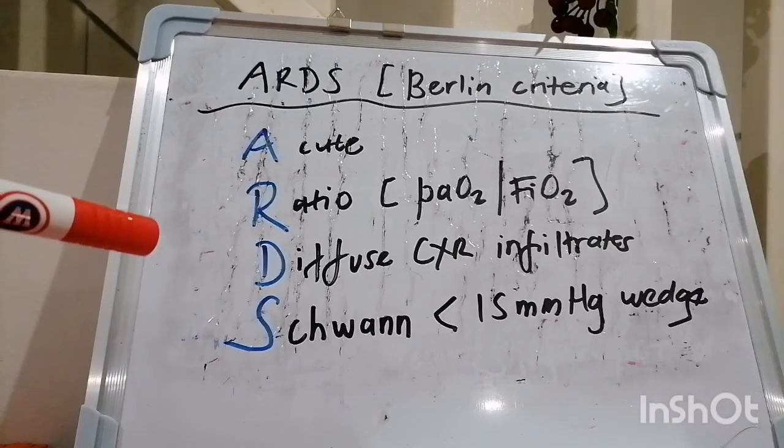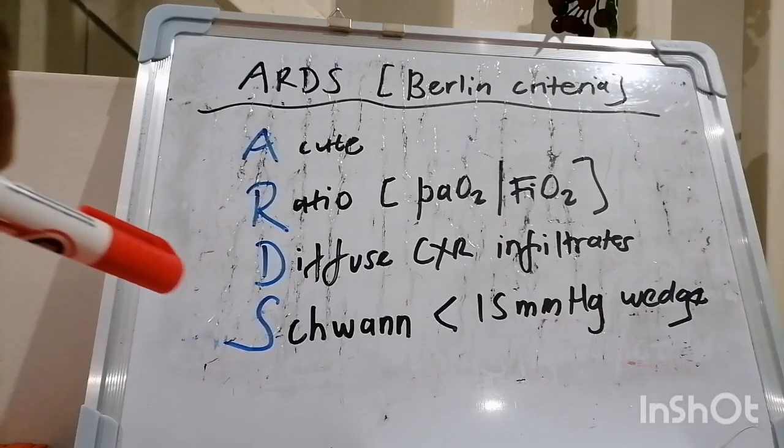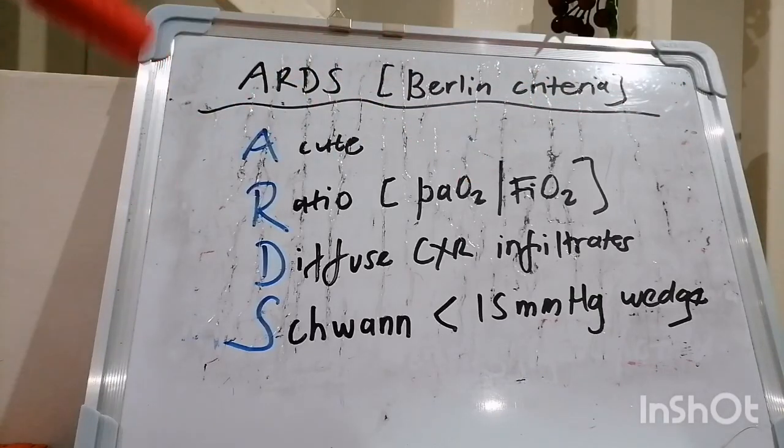And the last one is your Swan criteria. So you're talking about a right heart cath, which shows less than 15 millimeters mercury wedge pressure. So that basically indicates that there's absence of cardiac failure or fluid volume overload. However, objective assessments to exclude hydrostatic pulmonary edema in the way of echo is required if no risk factors for ARDS is present.